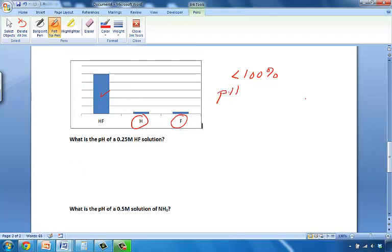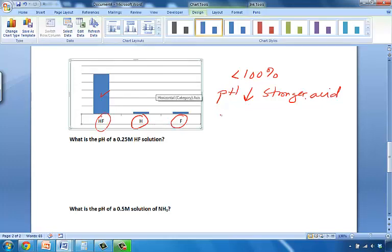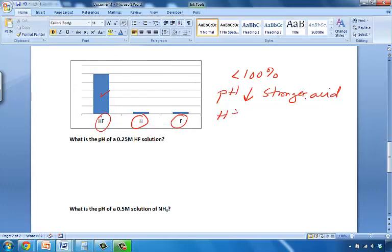Now, what affects pH? Remember, the lower the pH, the stronger the acid. So in order to get a very low pH and have a very strong acid, you need, out of all of these three, out of HF, H, and F, what you need is H+.